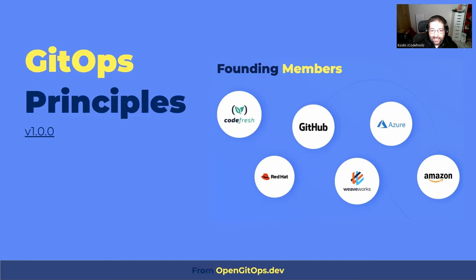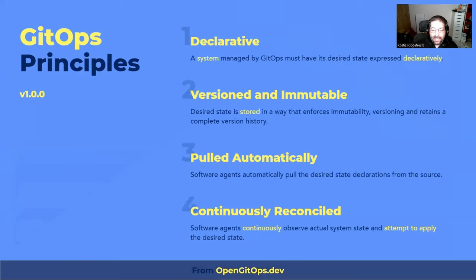If you don't know exactly what makes a tool GitOps, you should know about the GitOps principles at opengitops.dev — the page of the GitOps working group. Codefresh is one of the founding members, and also Weaveworks, the main company behind Flux. So these are not the Argo CD or Flux principles — they're the GitOps principles, and everybody agrees on them. The four principles are: declarative format, versioned and immutable storage, a software agent that pulls automatically, and continuous reconciliation so that what you have in storage is also in your infra.